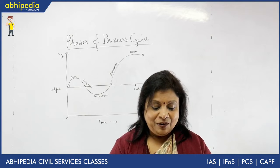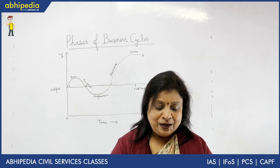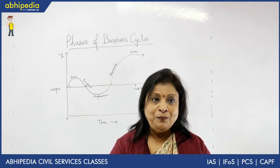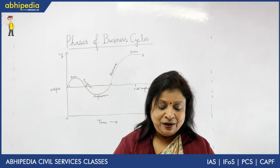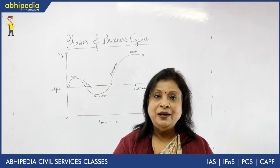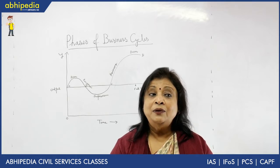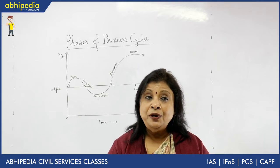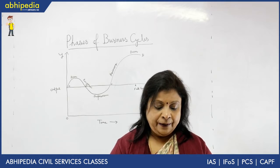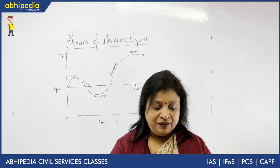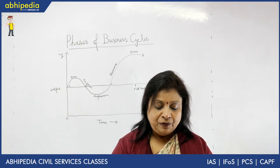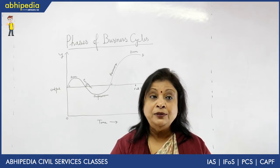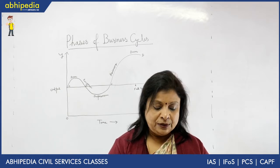That is why depression is considered a phase where people are depressed. The level of output and income is low. Unemployment increases. Wages, interest, and cost decline. The volume of profits also declines. Then price level falls. Demand for credit falls. Demand for consumer goods falls.